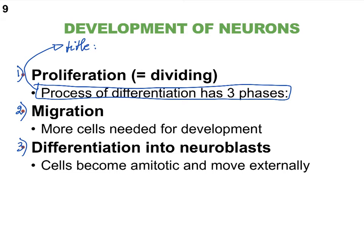After proliferating, the cells need to start migrating to their destination. You saw how the ectoderm layer invaginates and pinches off to form the neural tube, and you also have your neural crest cells forming — so there's a lot of moving around, and migration is involved. Then eventually these ectodermal cells have to start differentiating so that they become functional neurons. Initially they'll be immature neurons, and we call them neuroblasts. When they become neuroblasts, they actually have already become amitotic.